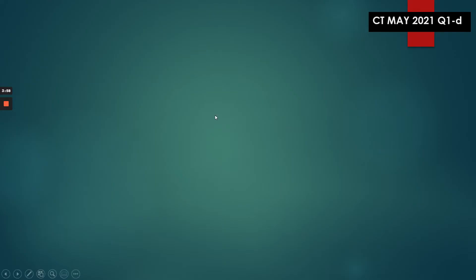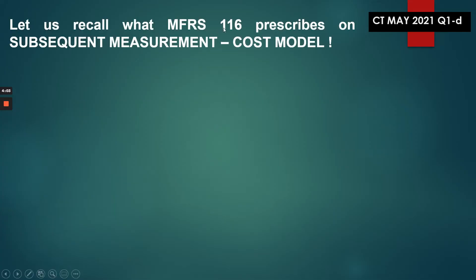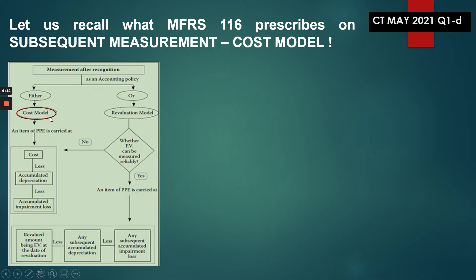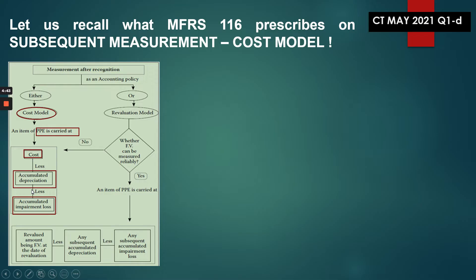Before we do the planning, let's recap what you have learned about impairment. MFRS 116 prescribes that on subsequent measurement under the cost model, an item of PPE is carried at cost less accumulated depreciation and less accumulated impairment loss. The carrying amount is arrived at by taking cost, less accumulated depreciation, less accumulated impairment loss. Under cost model, we ignore any changes in fair value or revalued amounts — that is the policy.